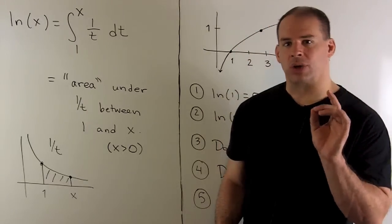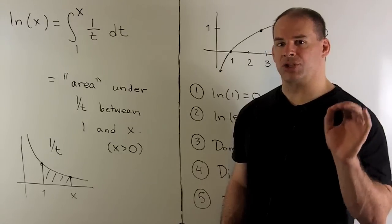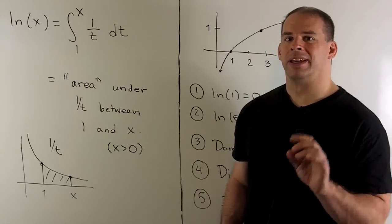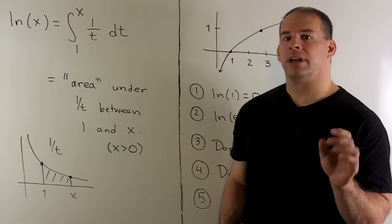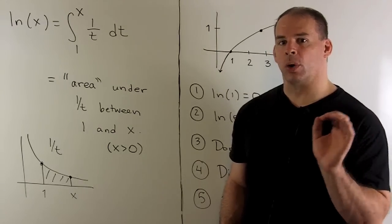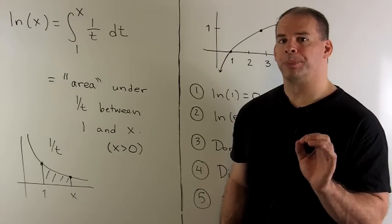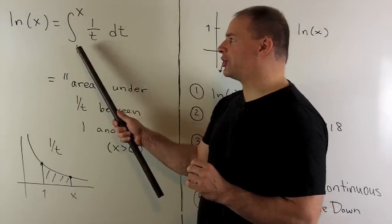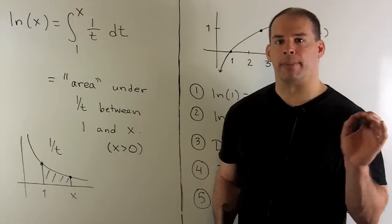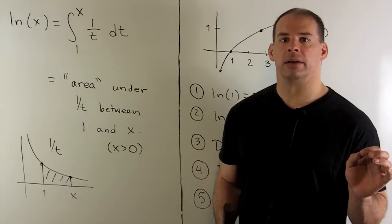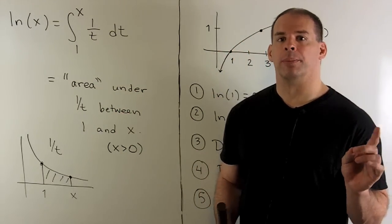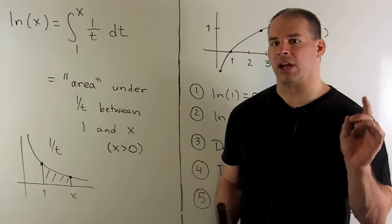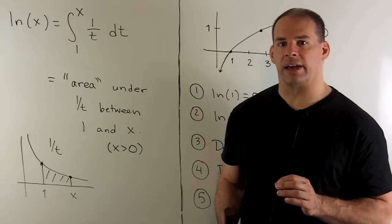Natural log of x is only going to be defined when x is greater than zero. If x is between zero and one, we're going to want to switch the limits of integration, and that's going to introduce a minus sign. So when we're between zero and one, natural log of x is negative.